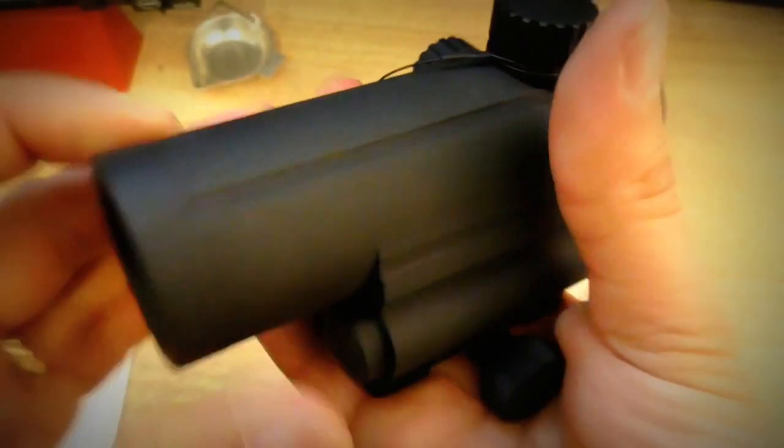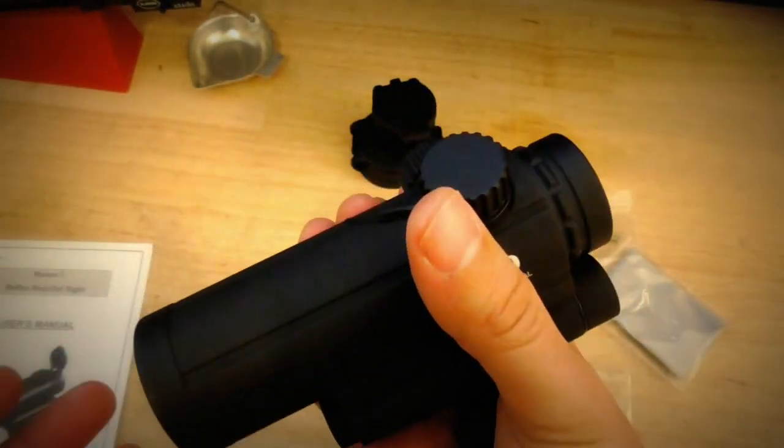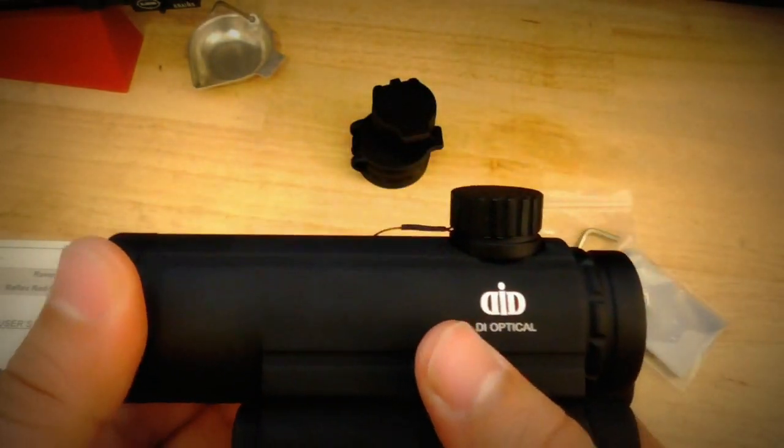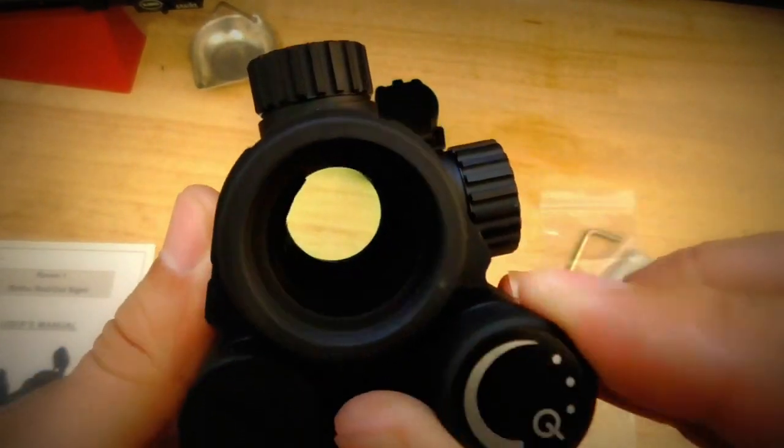I'm serious. This thing is heavy. It's 14 ounces. It's stout. If you're looking for a budget red dot, I'm going to recommend this over your Primary Arms, over your Vortex. This just blows them out of the water. I'm really impressed.